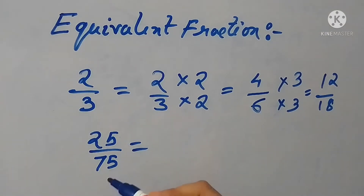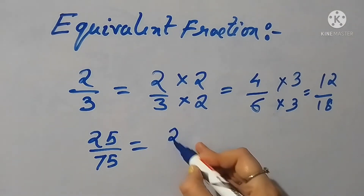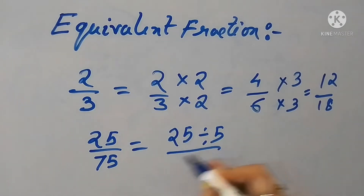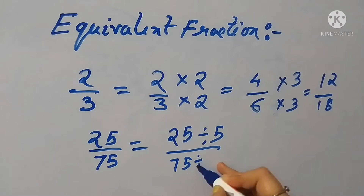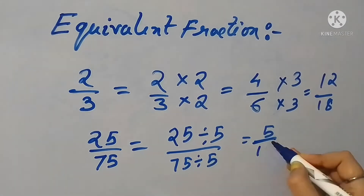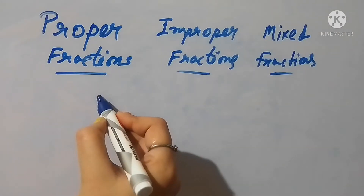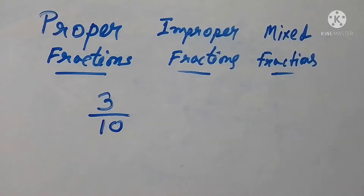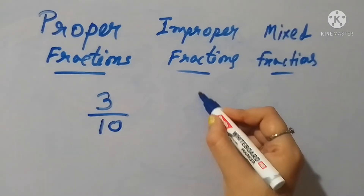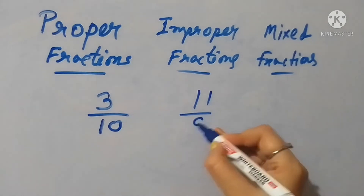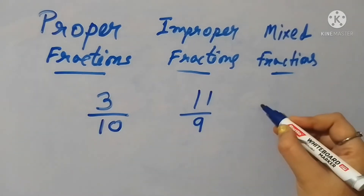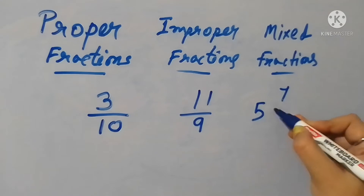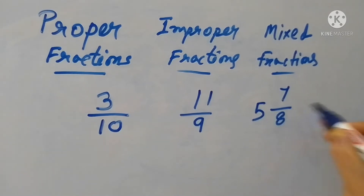We can also get an equivalent fraction by dividing the main fraction by the same number on both top and bottom. If the numerator is smaller than the denominator, it is a proper fraction. If the denominator is bigger than the numerator, it is an improper fraction. A combination of a whole number and a fraction is called a mixed fraction.